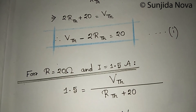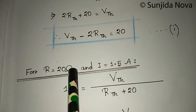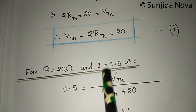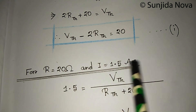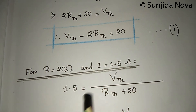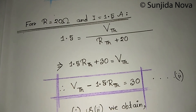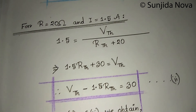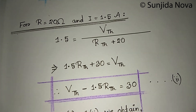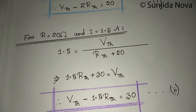The second condition is that R equals 20 Ohm and the current value is 1.5 Ampere. Using the same process, we calculate: V-Thevenin minus 1.5·R-Thevenin equals 30.